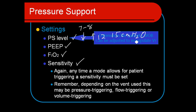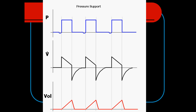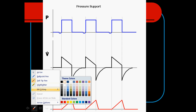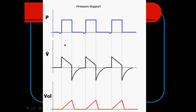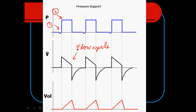The pressure support level determines the work of breathing of the patient. Here's our pressure-supported breath — it looks very much like a pressure-controlled breath, but let me point out the unique aspects. One, it's always going to be patient-triggered. Yes, it's going to be pressure-limited, just like in pressure control. But the key thing here is how it's cycling off — it's always flow-cycled. That's very different because in pressure control, it was always time-cycled.